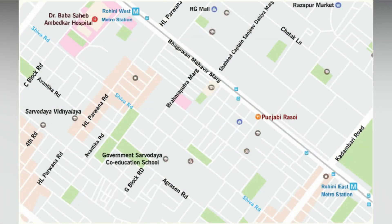Observe the map and answer the following questions. First, what is the symbol used for metro stations? You can see on the map that for metro stations the symbol used is M. How many metro stations are there in the map? One is in Rohini East and the other is in Rohini West.